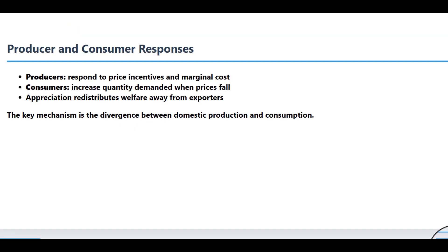And now we can see the inevitable outcome of this whole market adjustment. The currency appreciation caused producers to reduce QS, while at the same time it caused consumers to increase QD. So one number is getting smaller while the other is getting bigger. Logically, the gap between them — that export surplus — has to shrink.